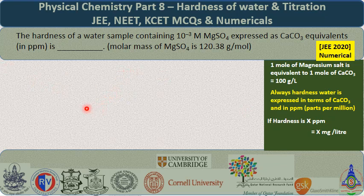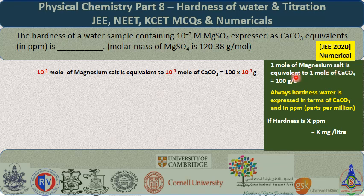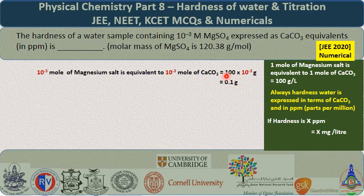Let us solve by the conventional method. We know that 1 mole of magnesium salt is equivalent to 1 mole of calcium carbonate, which equals 100 grams. What is given? 10⁻³ moles of magnesium salt is equivalent to 10⁻³ moles of calcium carbonate. That equals 100 × 10⁻³, which gives 0.1 gram. So 0.1 gram of calcium carbonate is present in 1 litre of water.